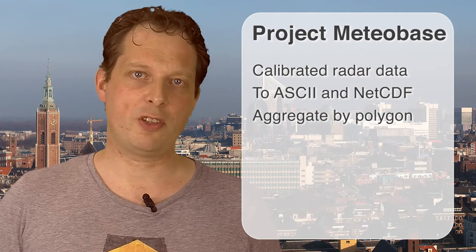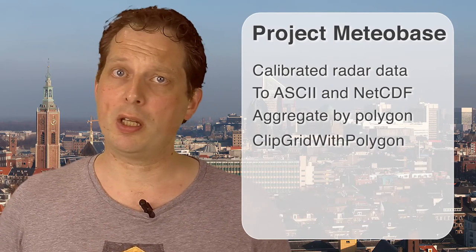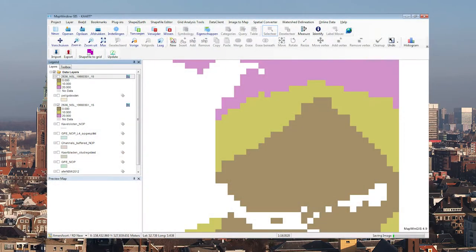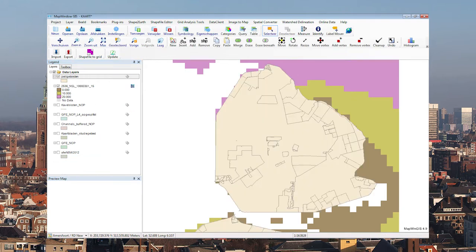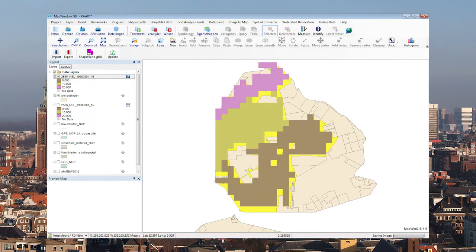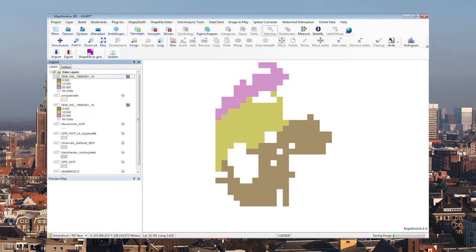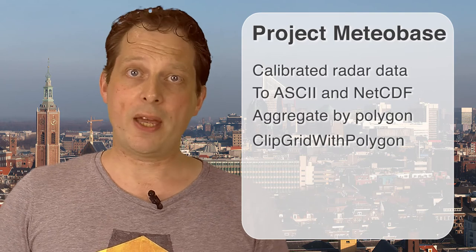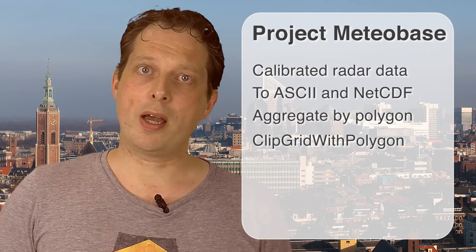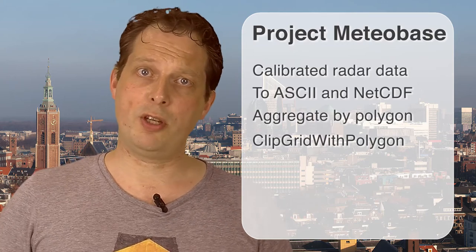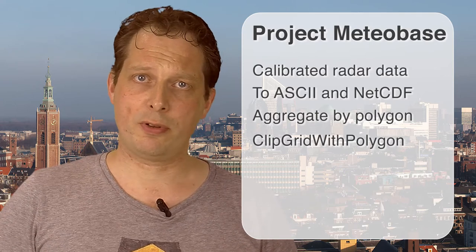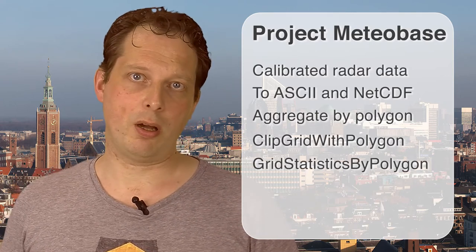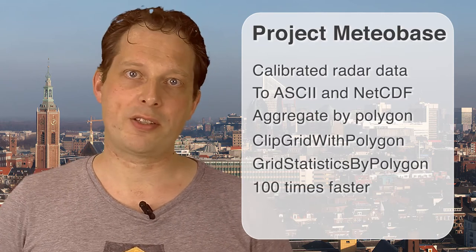Implementing polygon aggregation on the server provided a challenge. Our first approach used the Clip Grid with Polygon feature of the ActiveX control — we would take the precipitation grid and a shapefile, clip the grid for each polygon, and calculate the average value. With ten years of hourly precipitation data and about 1,000 polygons, that process was very slow. So we hired Sergei Lechinsky, one of the MapWin GIS ActiveX control developers, who implemented a new feature called Grid Statistics by Polygon, which turned out to be about 100 times faster than our previous approach.